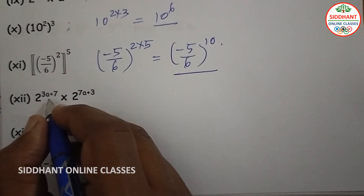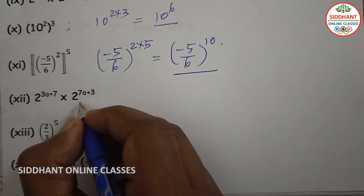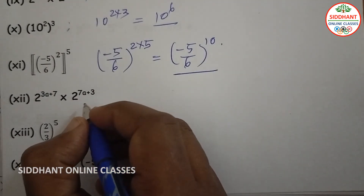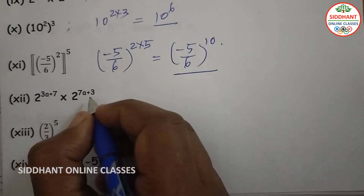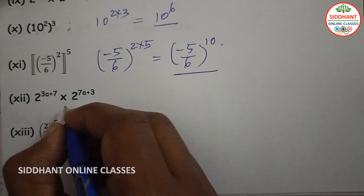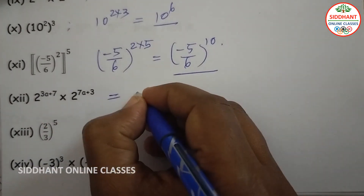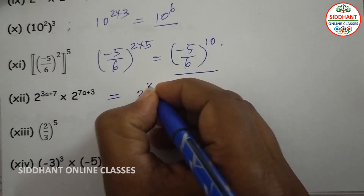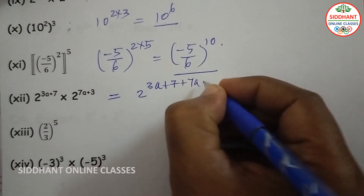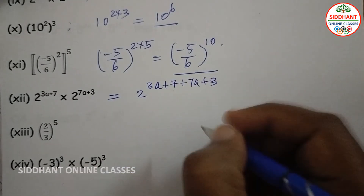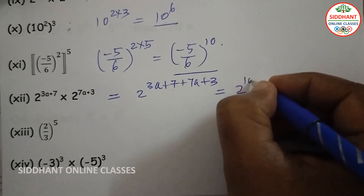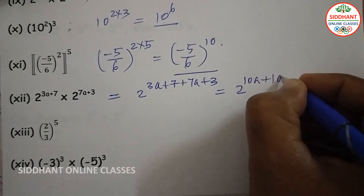Twelfth one: 2 to the power of (3a plus 7) into 2 to the power of (7a plus 3). Bases are same, so we add the powers: 2 to the power of 3a plus 7 plus 7a plus 3, that will be 2 to the power of 10a plus 10.